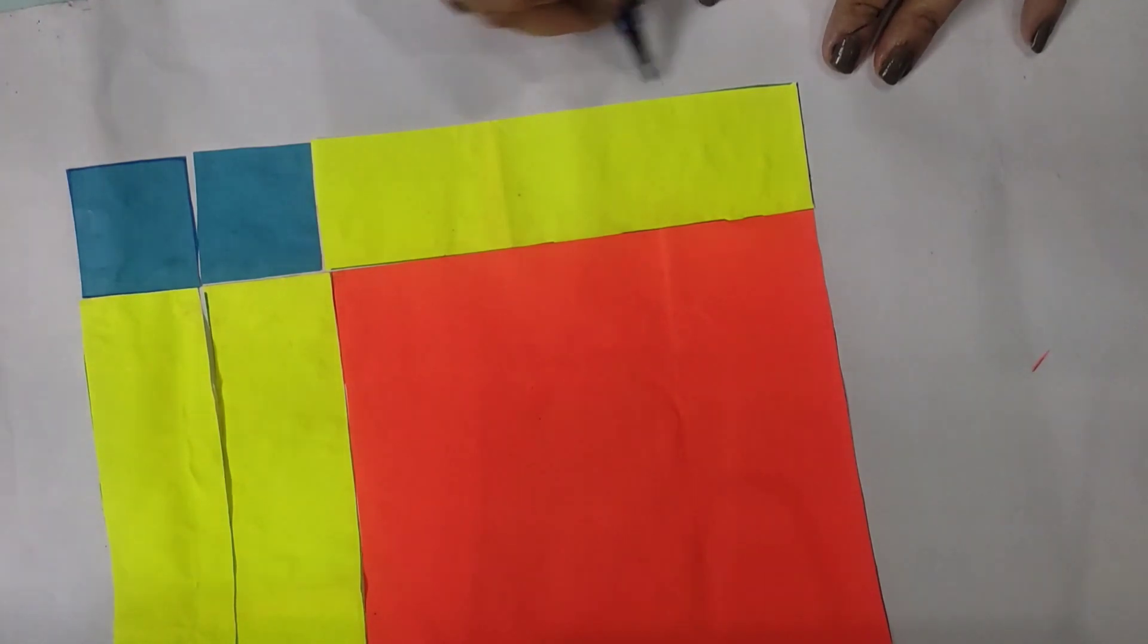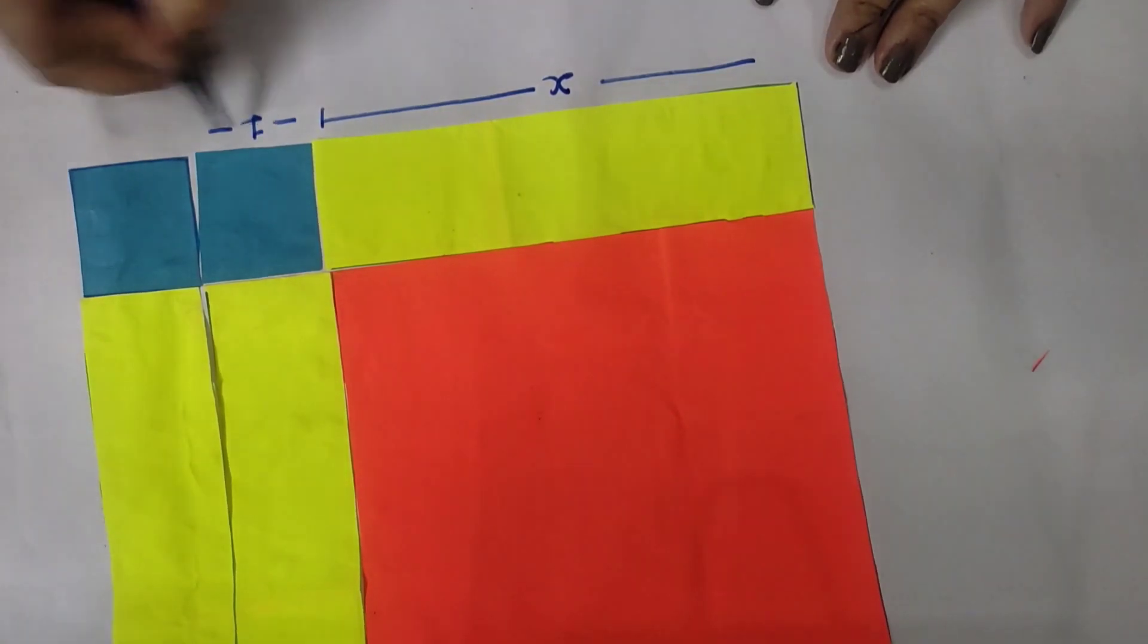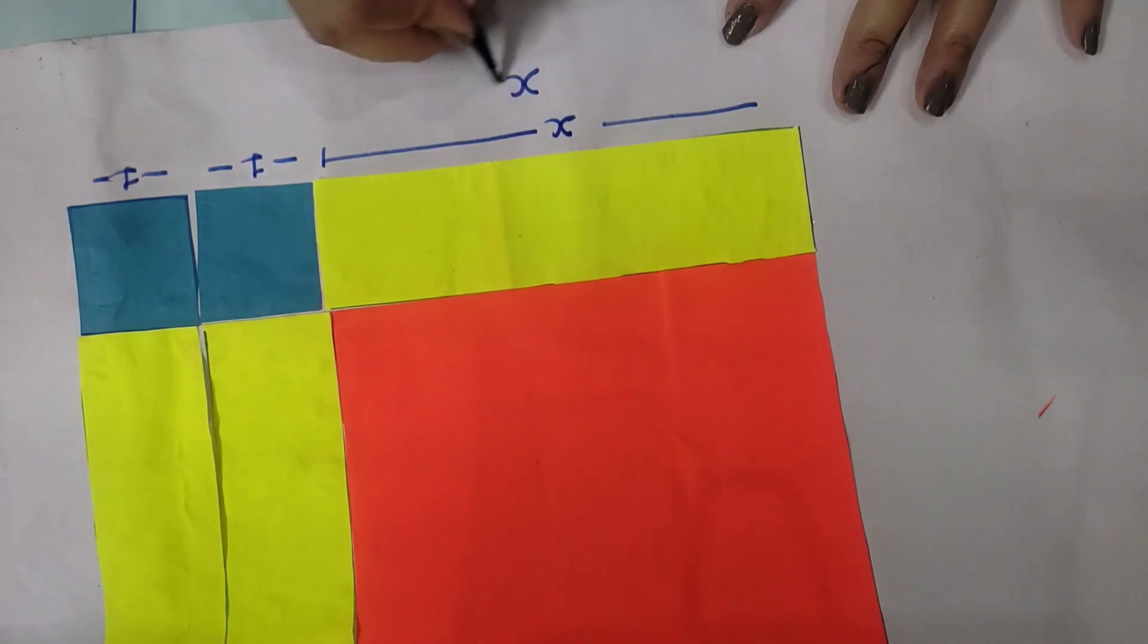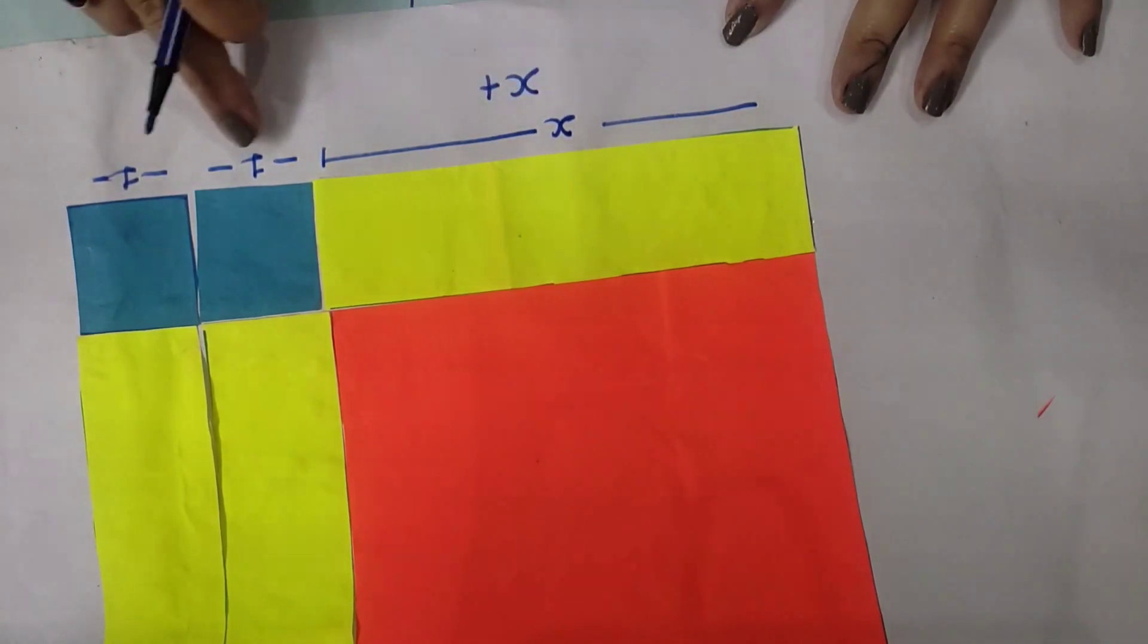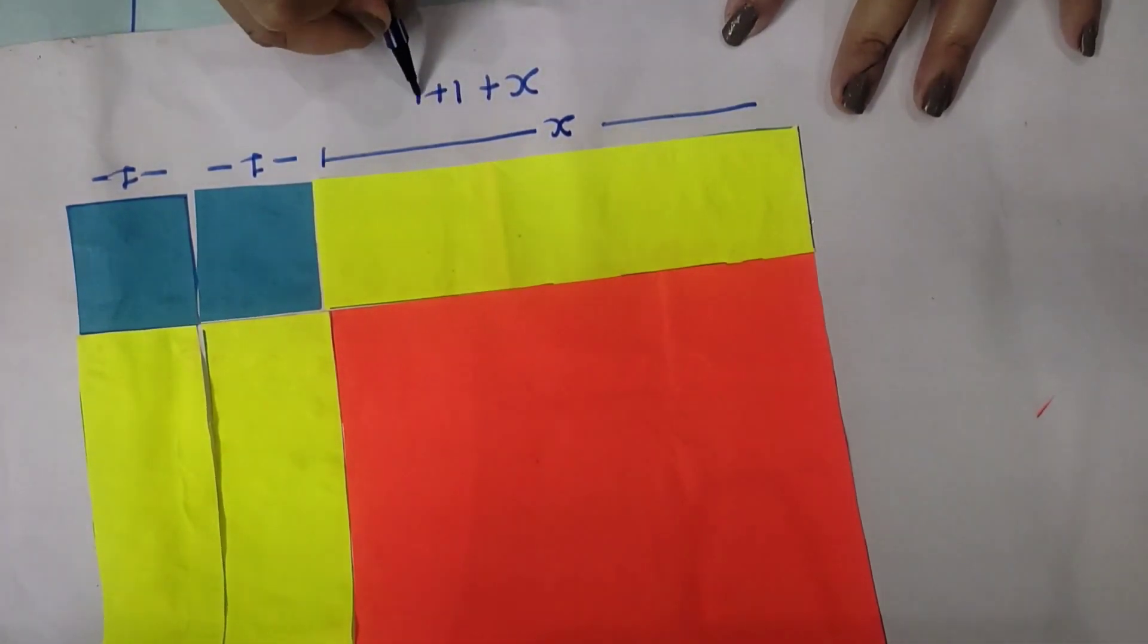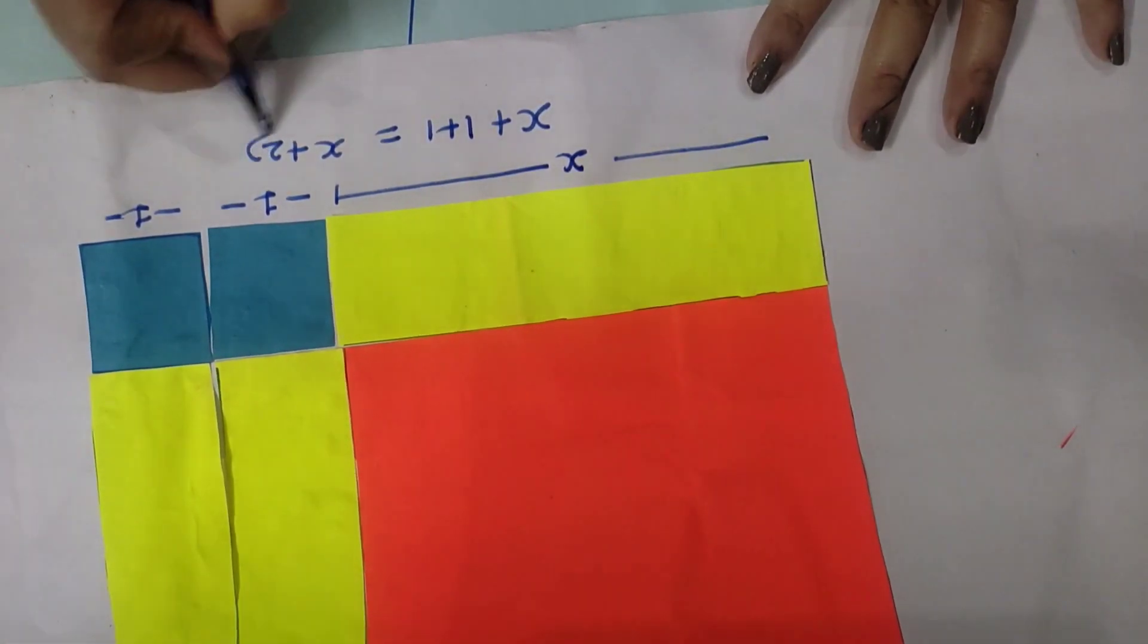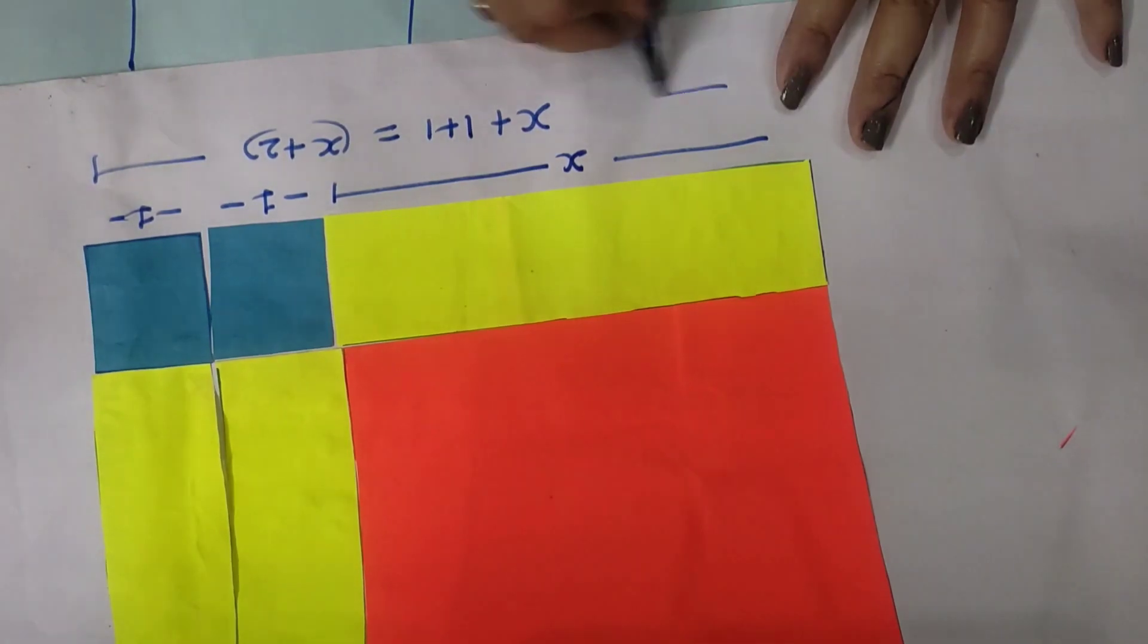So the length is, you can take this portion is x. This rectangle length is x and the squares are 1 and 1. So this length equals x plus 1 plus 1. 1 plus 1 equals 2, so you can write x plus 2. So its length is x plus 2.